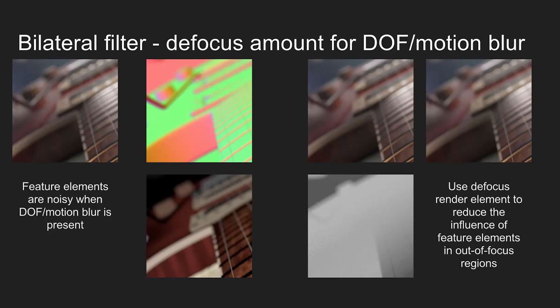When we have depth of field or motion blur, the feature elements like normals or diffuse texture color are actually noisy. There's no real way for the denoiser to find out which parts of the image are in focus and which are not. That's why we asked the renderer to produce another render element called a defocus amount render element, which tells us which parts are in focus and which are not. The denoiser knows that when this element is large, we have something out of focus and can blur it more.